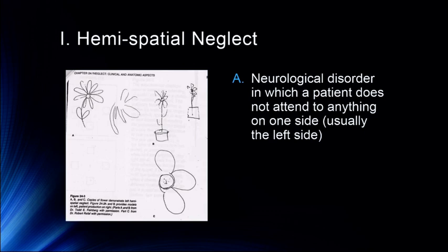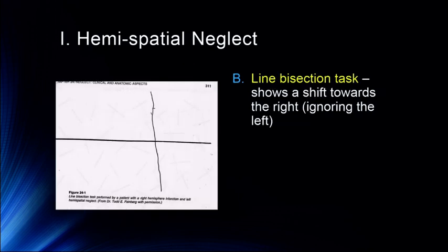These are other line drawings by a hemispatial neglect patient. You can see once again they've left off significant portions of the left-hand side. And this is a line bisection task. The task here is to draw a line down the middle of the line — to bisect it. It's supposed to be about here in the middle.